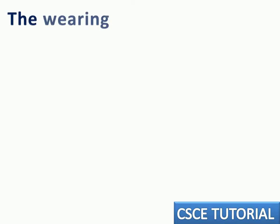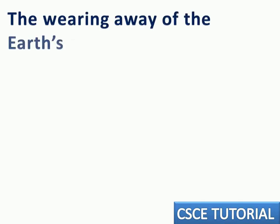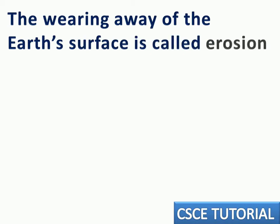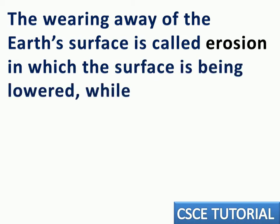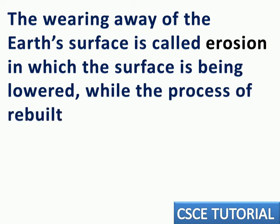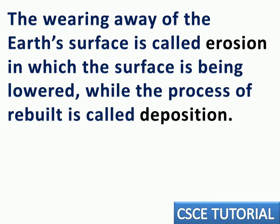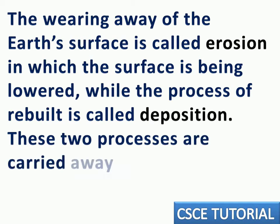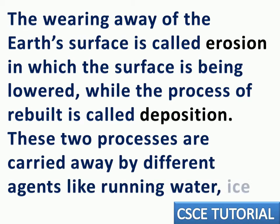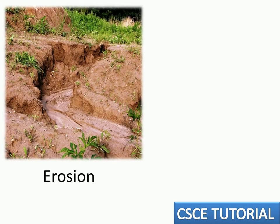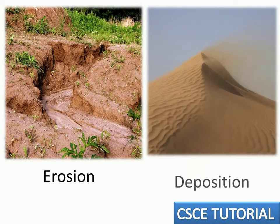The wearing away of the Earth's surface is called erosion, in which the surface is being lowered, while the process of rebuilding is called deposition. These two processes are carried out by different agents like running water, ice, and wind.